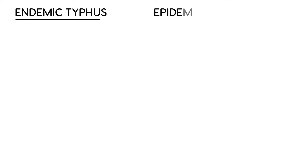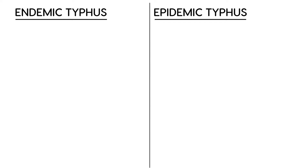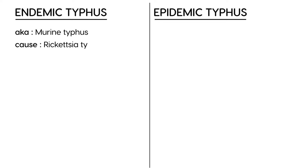We have endemic typhus and epidemic typhus. I'll first talk about endemic typhus and then compare it to epidemic typhus in a table format. Endemic typhus can sometimes be referred to as murine typhus. It is caused by rickettsia, in particular an organism named Rickettsia typhi.